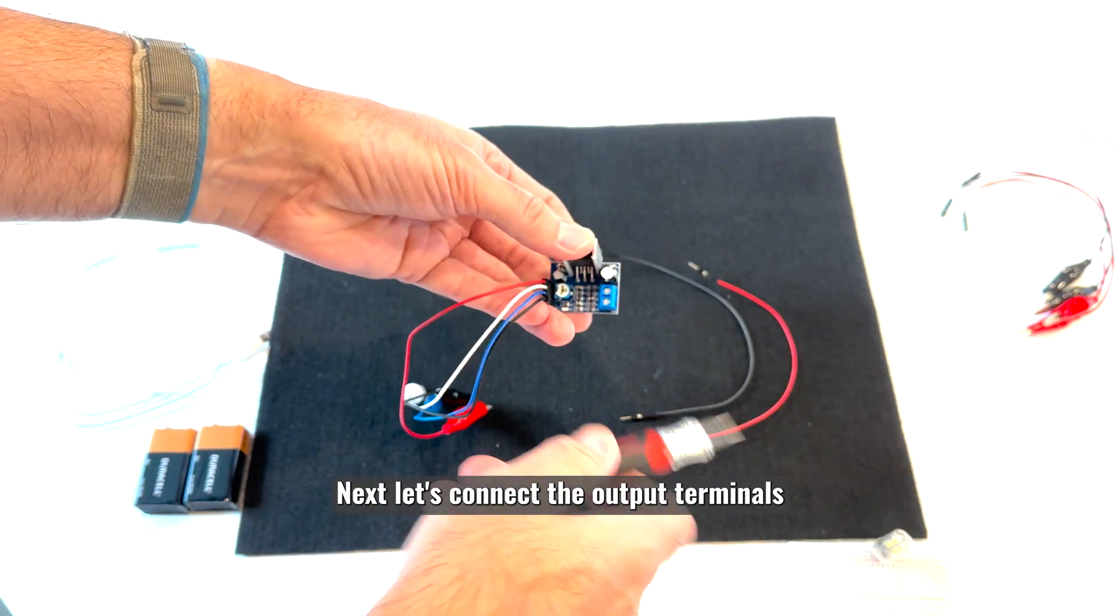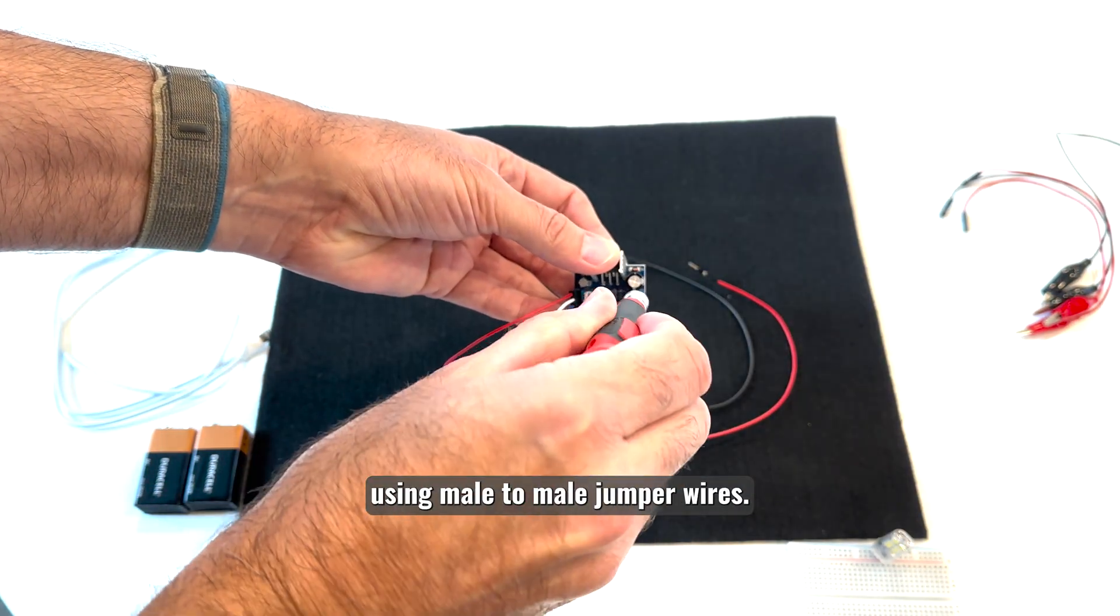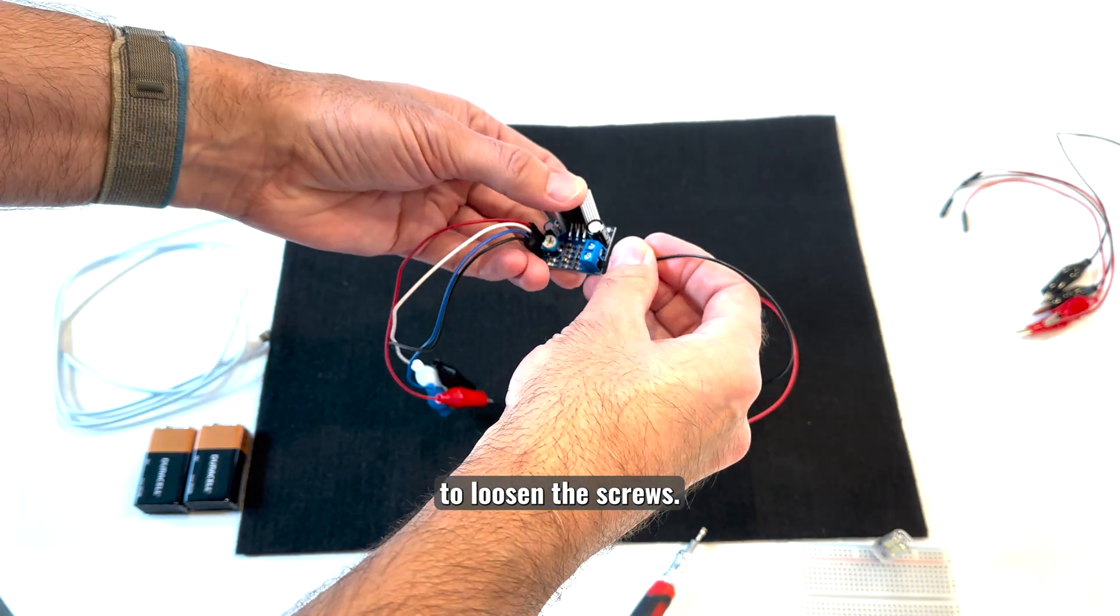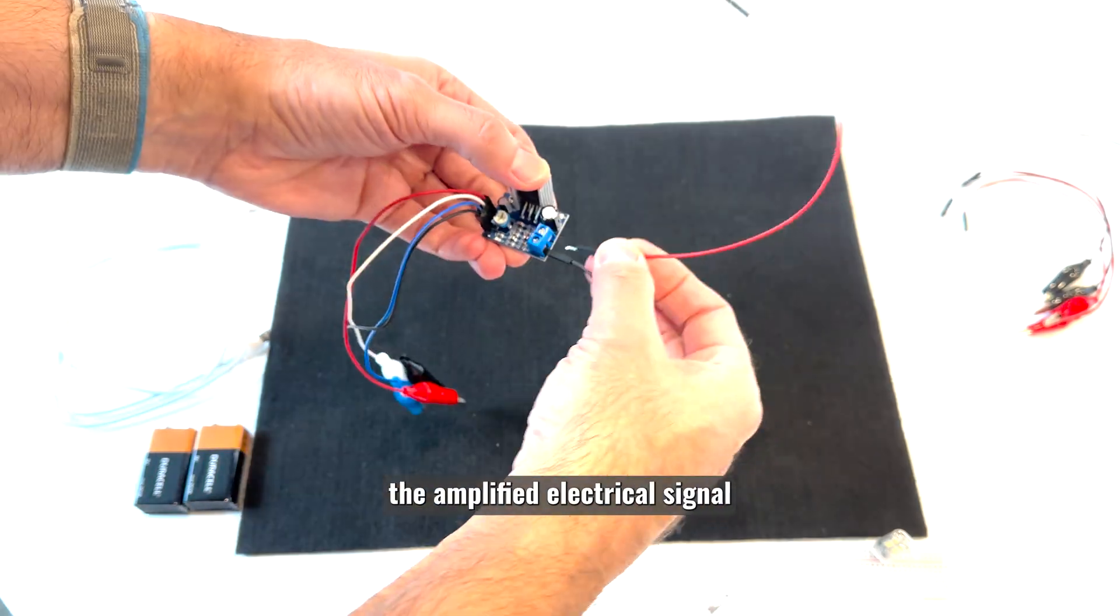Next, let's connect the output terminals using male to male jumper wires. You may need your little screwdriver to loosen the screws. These wires will provide the amplified electrical signal to your light bulb.